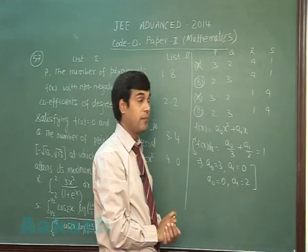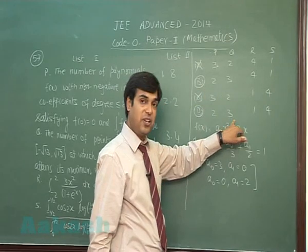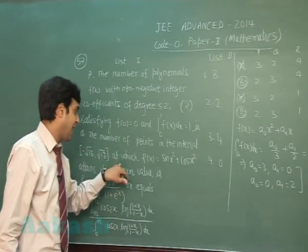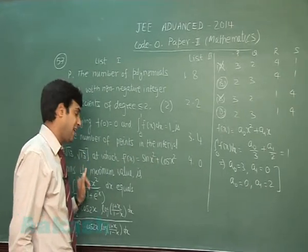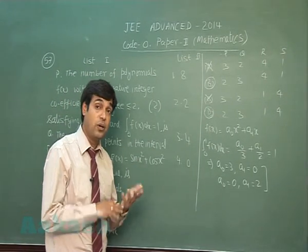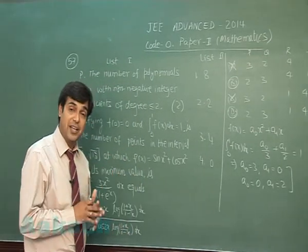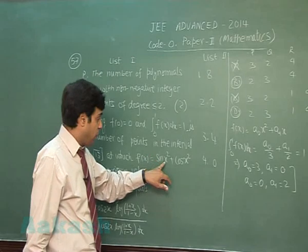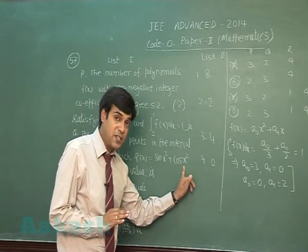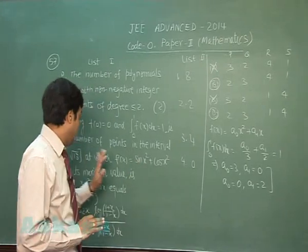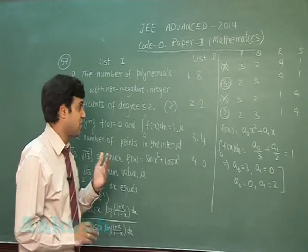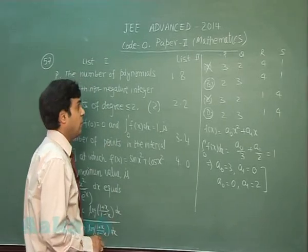For Q, both options give 3, so it is not strictly required to solve Q. But checking: the number of points in the interval at which sin(x²) + cos(x²) attains its maximum — sin θ + cos θ attains maximum when θ = π/4, 9π/4, 13π/4, etc. Setting x² equal to these values, x² = π/4 and x² = 9π/4 are positive, giving four values of x. So for Q the answer is 4.